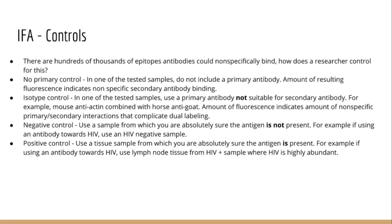Controls for an IFA experiment are especially important because when adding a fluorescent antibody to tissue you are exposing these antibodies to hundreds of thousands of epitopes or binding sites, and the potential for non-specific binding can completely throw off your experiment. The most common control is a no-primary control, where in one staining procedure everything is exactly the same except there is no primary antibody added — any resulting fluorescence would indicate the secondary fluorescent antibody binding non-specifically. Another common control used during dual labeling experiments is an isotype control, where a primary antibody that is not compatible with a fluorescent secondary antibody is added to check for cross-reactivity.